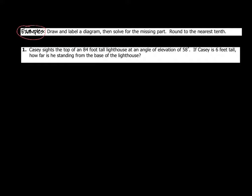The great news is you already know all of the math behind this. This is basically just word problems with trig functions. Examples are going to demand that we draw and label — it's a one-two process — then solve for the missing part, and we're going to round to the nearest tenth, one decimal place out.